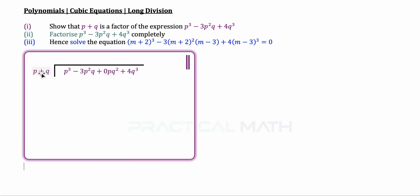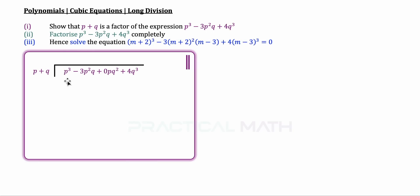The divisor is p plus q, and the quotient will be written above. The objective of this long division is to show that the remainder is zero, because whether using the factor theorem or long division, so long as the remainder is zero, we can prove that this divisor is indeed a factor of this expression. The idea of long division is to eliminate term by term slowly.